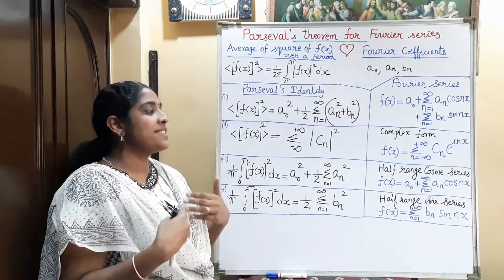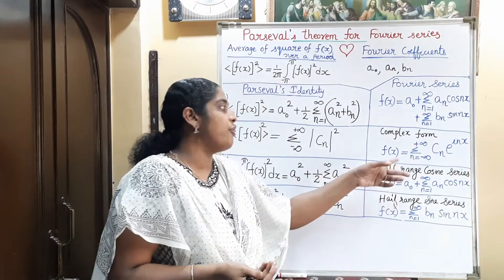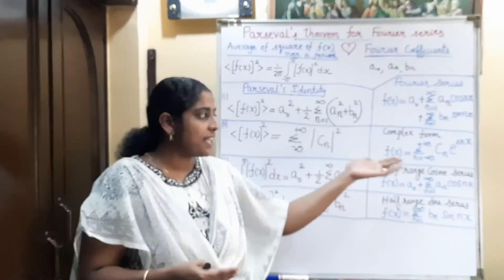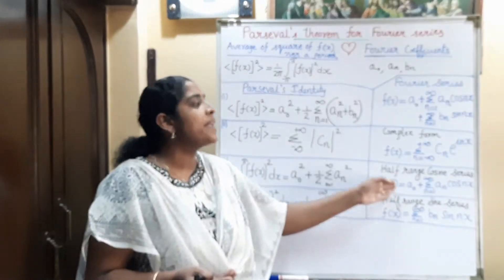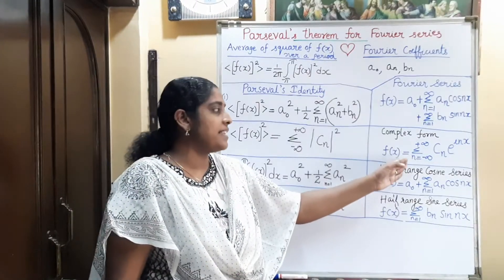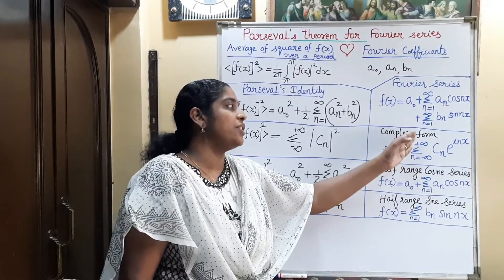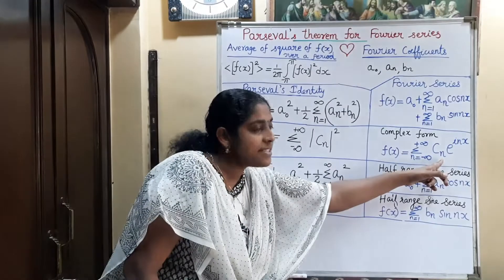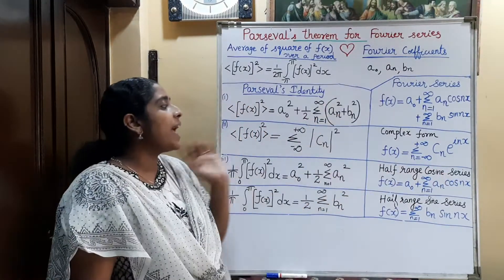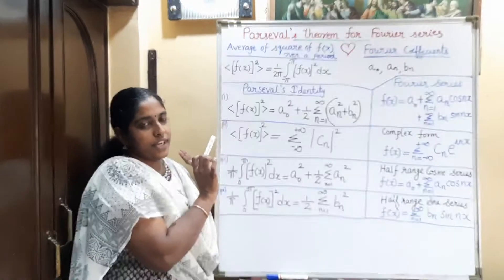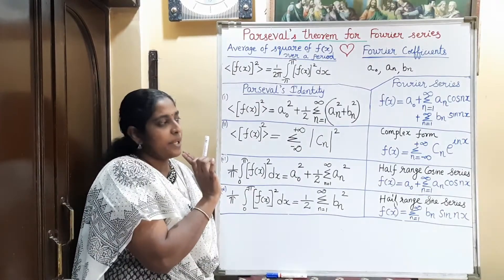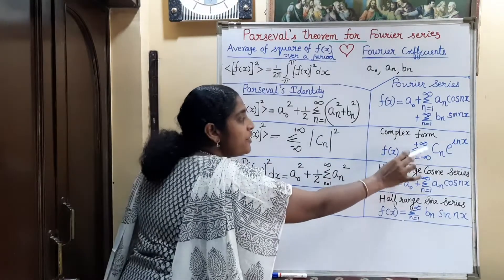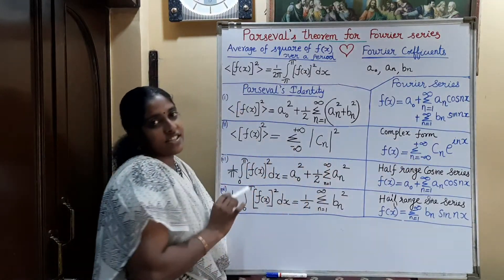If we write the Fourier series in complex form — that is, f(x) = Σ(n=−∞ to +∞) cₙ e^(inx), as seen in the last video — then the Fourier coefficient is cₙ, and Parseval's identity becomes: the average of the square of the function over a period equals Σ(n=−∞ to +∞) |cₙ|².